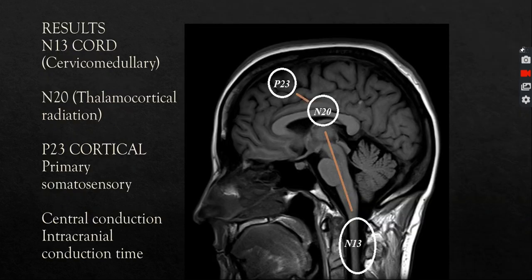What we are expecting to find: when the impulse travels up to the cord inside the cervical medullary part, there will be a wave produced called the N13, which is the first thing we look for. When it travels up to the thalamus, there's another wave produced called the N20, and the last wave called the P23 or P24 or P25 will be produced in the primary somatosensory cortex.